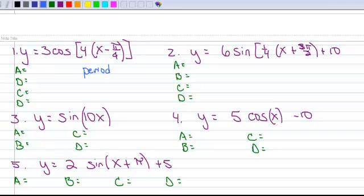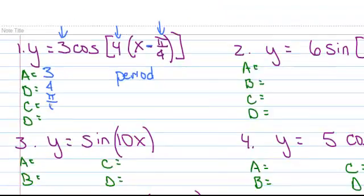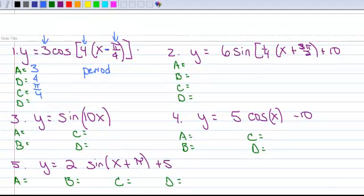All right, so let's start with example one here. Well, the A is right here, so the A is three. And the B is right here, so the B is four. And the C is right here. Notice the equation has a minus in it, so that means that C is just a positive pi over four. And D, because there's nothing at the end, D is zero.